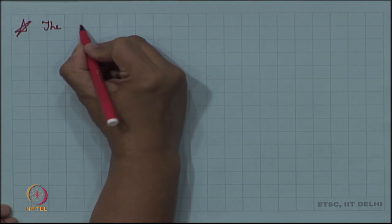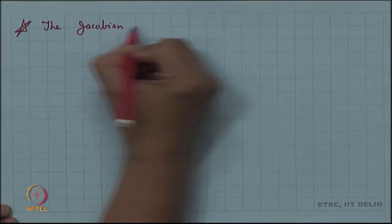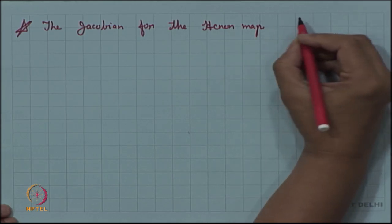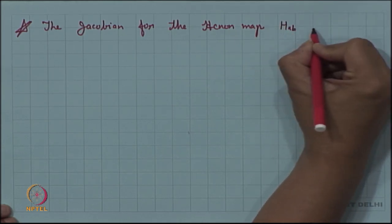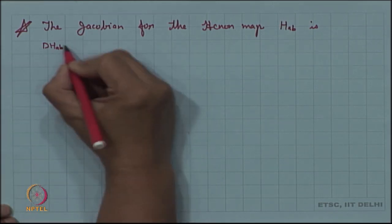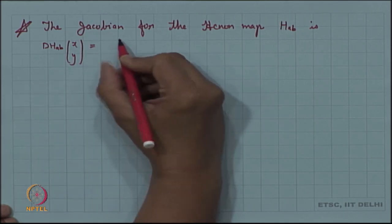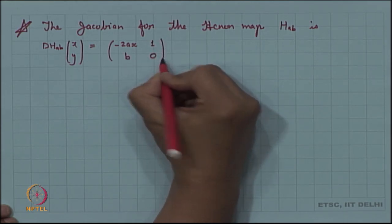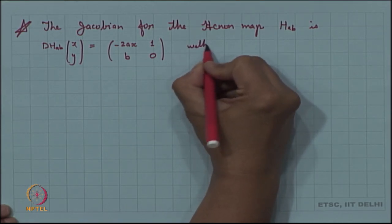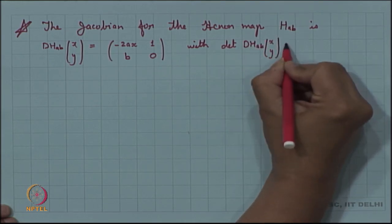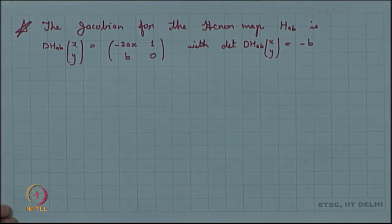We look into the Jacobian of the Hennon map. The Jacobian d·H_{a,b} at (x, y) is the matrix with entries (-2a·x, 1; b, 0), and the determinant of the Jacobian equals -b.